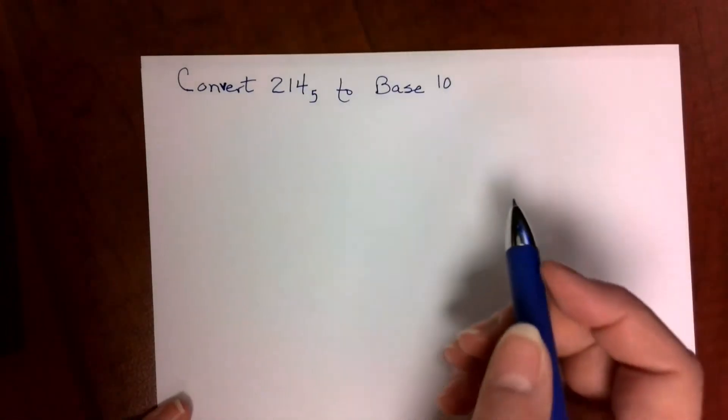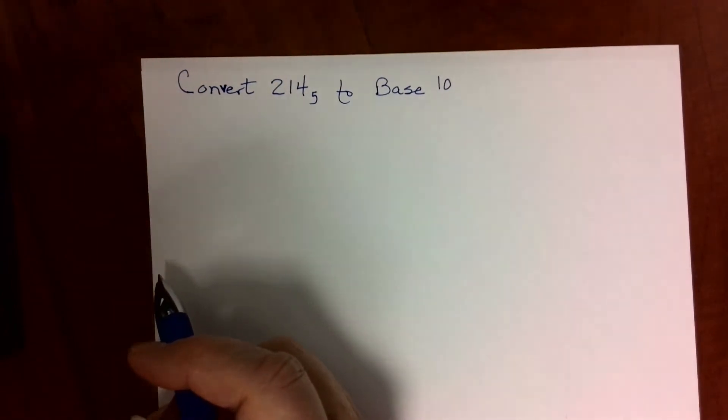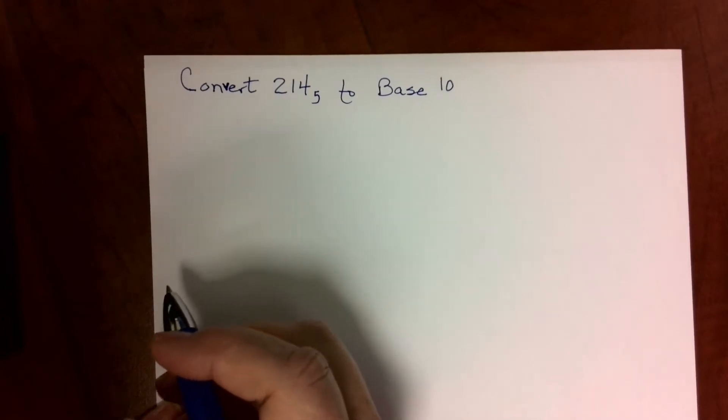This is a brief video about one example of converting a base 5 number to a base 10 number. The key to this is to know the place value columns.